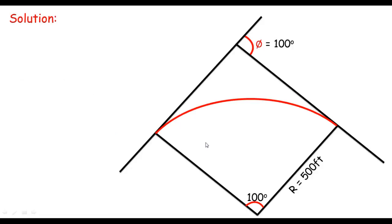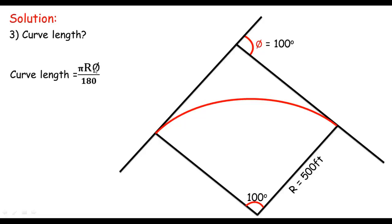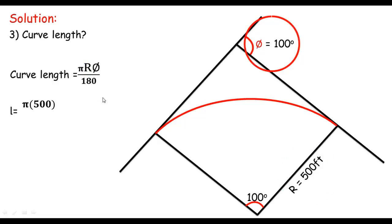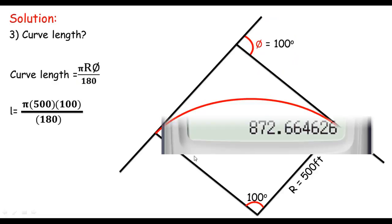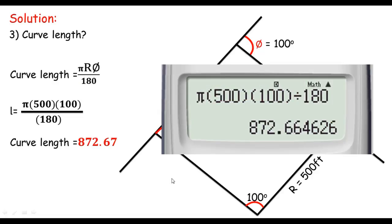Next, let me calculate the curve length. For the curve length, we have the formula L = πR × Δ/180. Plugging in: L = π × 500 × 100/180, giving us a curve length of 872.67 feet.